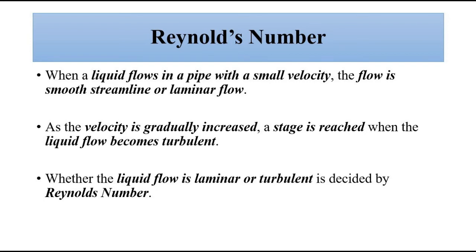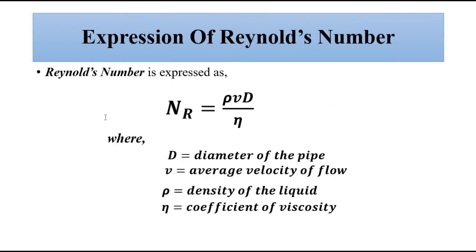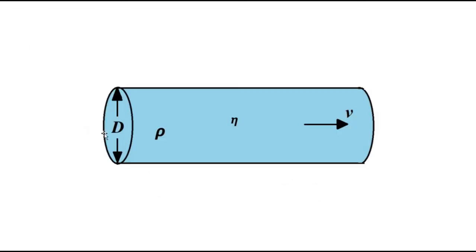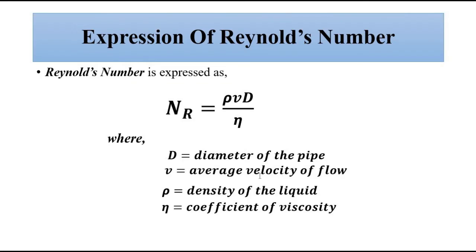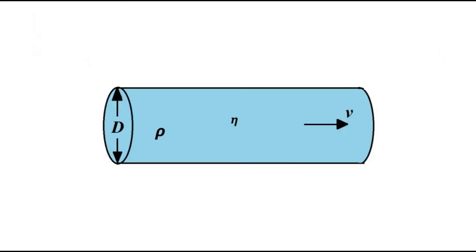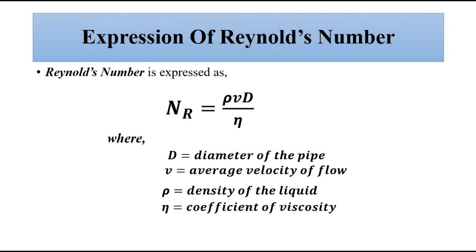Reynolds number tells us whether a particular liquid flow is steady or turbulent. Reynolds number is expressed as: N_R = ρvD / η. Here, D is the diameter of the pipe through which liquid is flowing, v is the average velocity of the liquid flow, ρ is the density of the liquid, and η is the coefficient of viscosity.